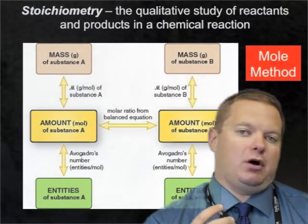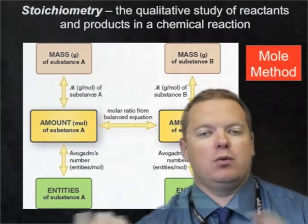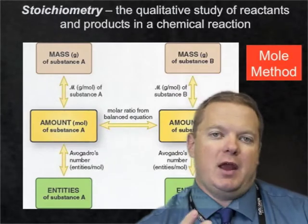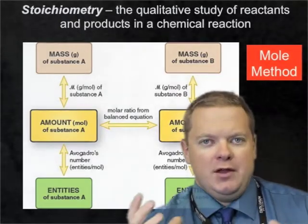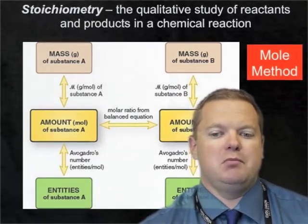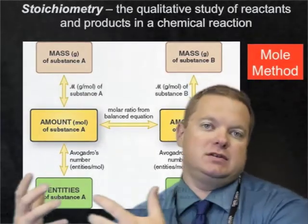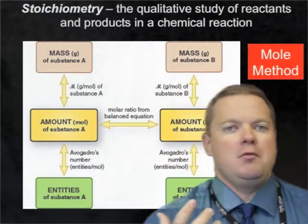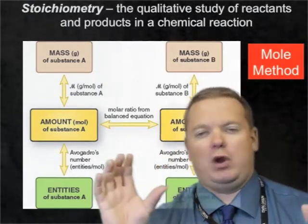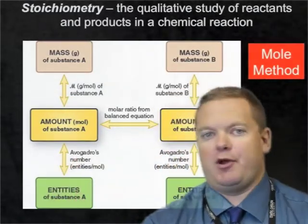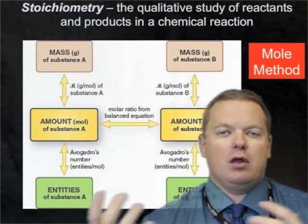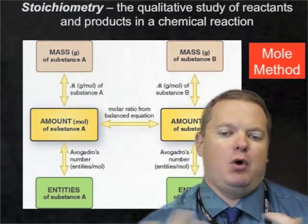We're going to relate that through what we call the mole method. In a balanced chemical equation, this equation gives us relationship in moles. We can talk about the moles of reactant giving us moles of product, or moles of one reactant reacting with a certain amount of moles of another reactant to form products. So all of this case we're always going to relate in moles.